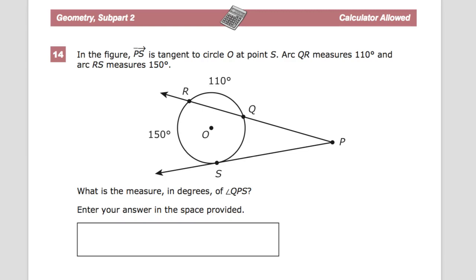In the figure, ray PS is tangent to circle O, which means it strikes the circle at one single point, at point S. Arc QR measures 110 and arc RS measures 150. What is the measure, in degrees, of angle QPS?